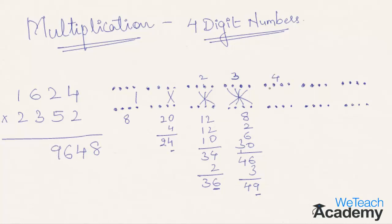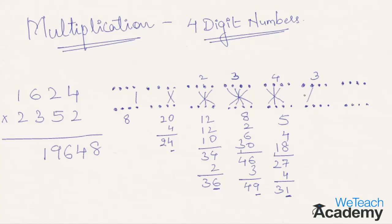In the next step we proceed in reverse order with the same pattern shown in the figure. So 5 into 1 is 5, 2 into 2 is 4, and 6 into 3 is 18. So 5 plus 4 plus 18 gives 27, plus the 4 carried forward, gives 31. So 1 is taken to the final result and 3 is carried to the next step.